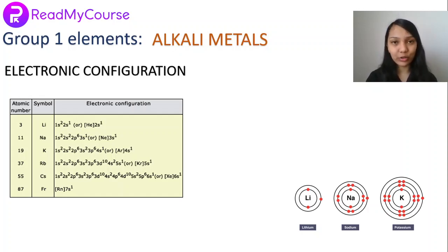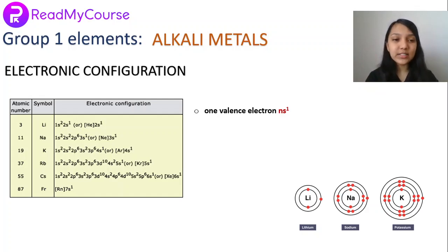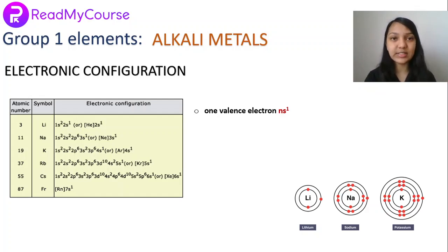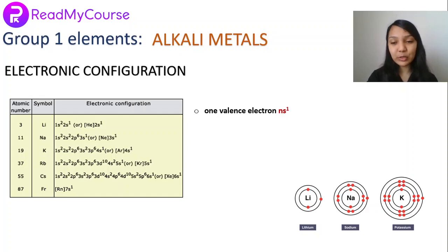The s-block elements have two further categories — two groups. The first group is called the alkali metals, and the second group is called the alkaline earth metals. We'll first discuss the group 1 elements, the alkali metals. These alkali metals have the outer electronic configuration ns1, and the alkali metals are lithium, sodium, potassium, rubidium, cesium, etc.